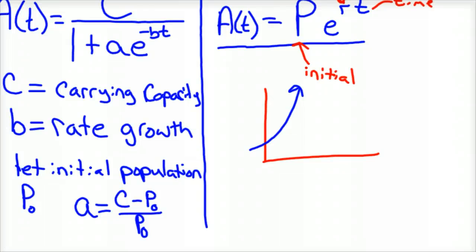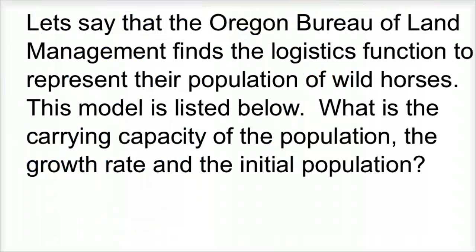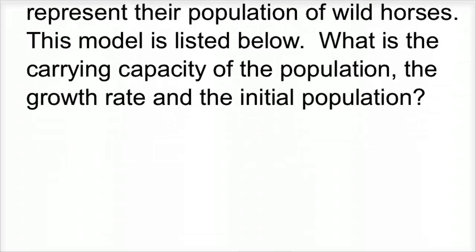So let me give you an example of this and we'll work with maybe horse populations. This will be a totally fictitious problem, but it'll give you something tangible to wrap your mind around. So let's say that the Oregon Bureau of Land Management finds the logistics function to represent their population of wild horses. This model is going to be listed below. I'll write it down here in a second. We need to find what is the carrying capacity of the population, which would be where we should cap the population, the growth rate, and the initial population that we started with for this particular model.